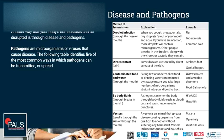Contaminated food and water: eating raw or undercooked food, or drinking water contaminated by sewage, means you take large numbers of microorganisms straight into your digestive tract, which can cause infections. In water, this can be cholera or amoebic dysentery; in food, this is often a salmonella infection.